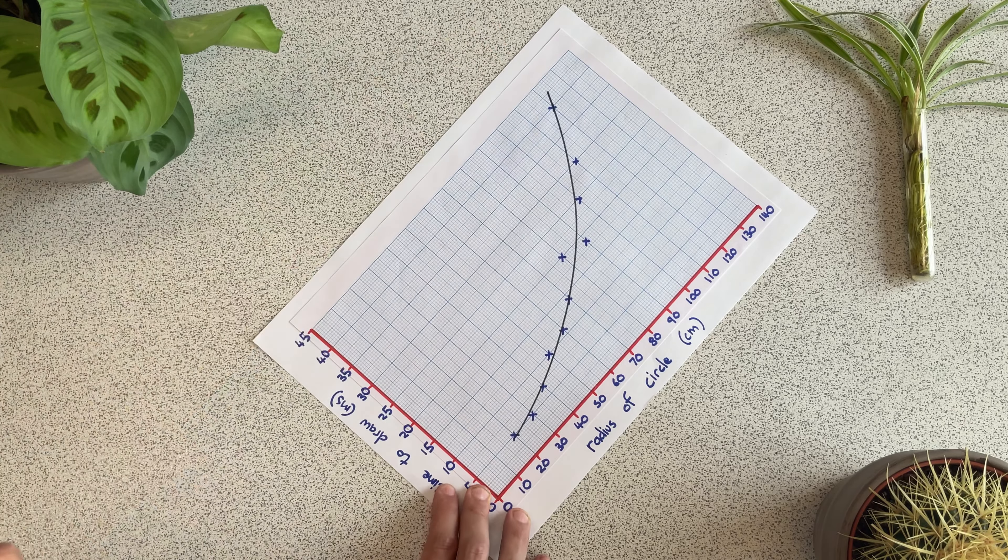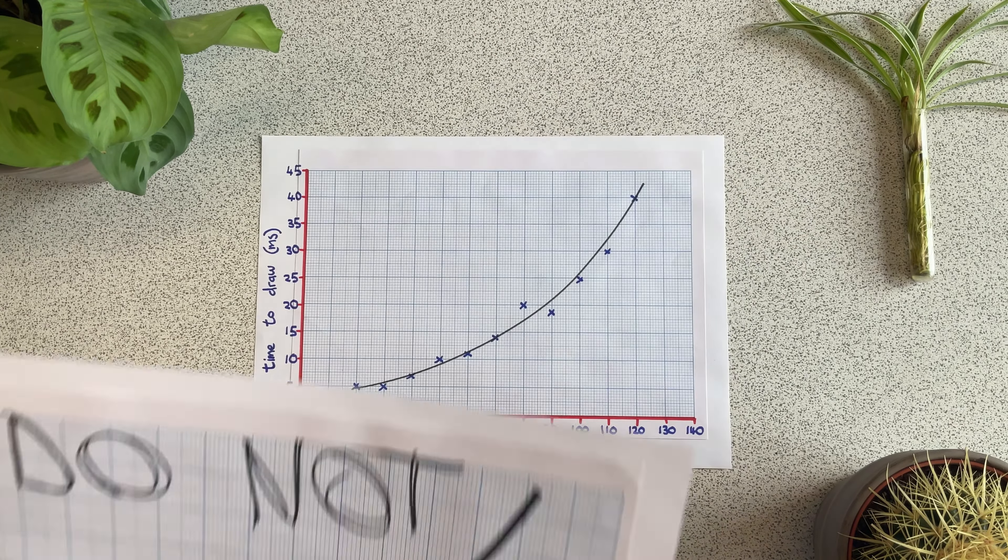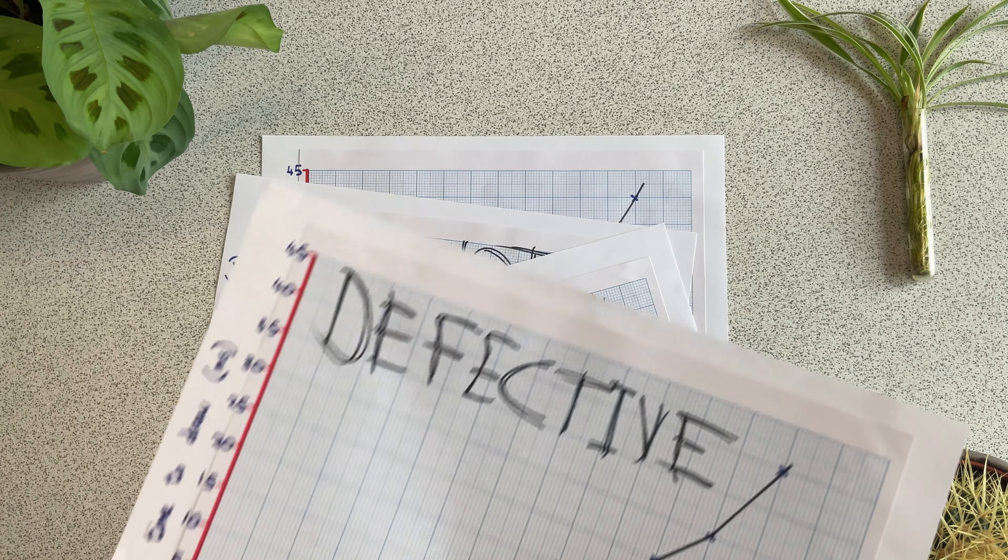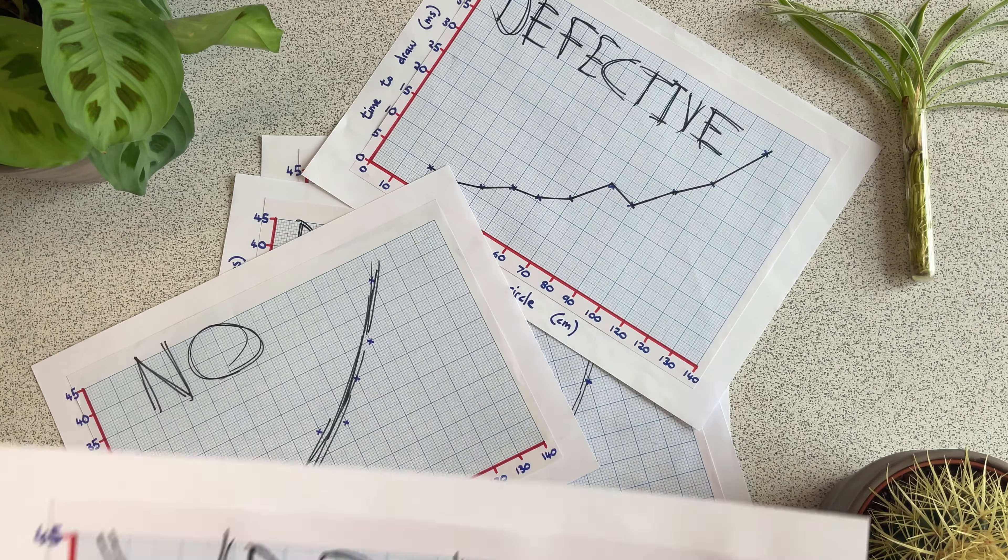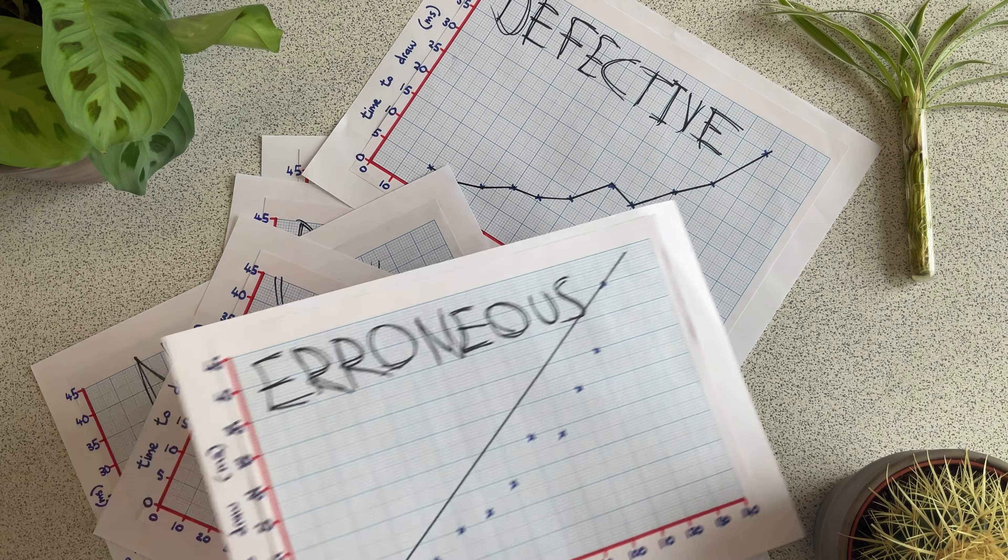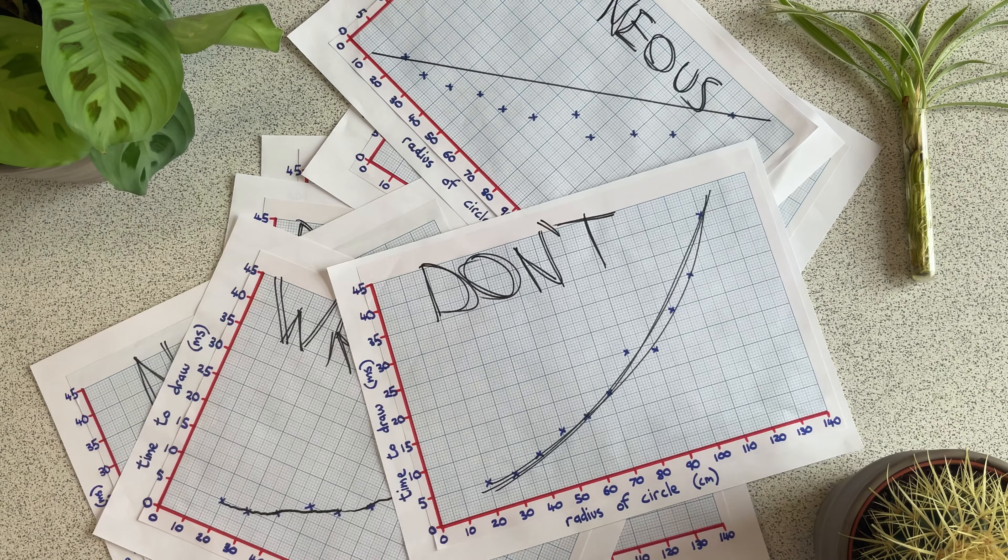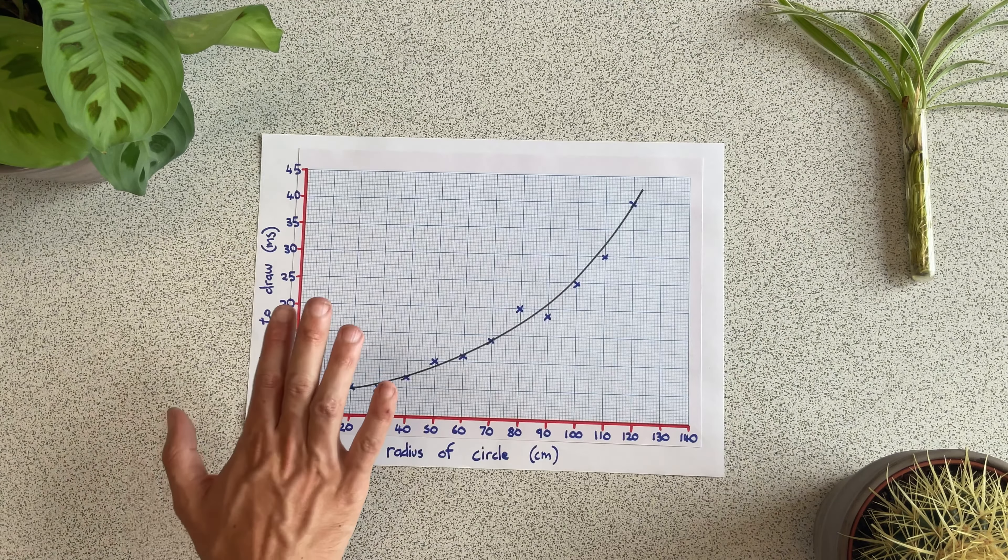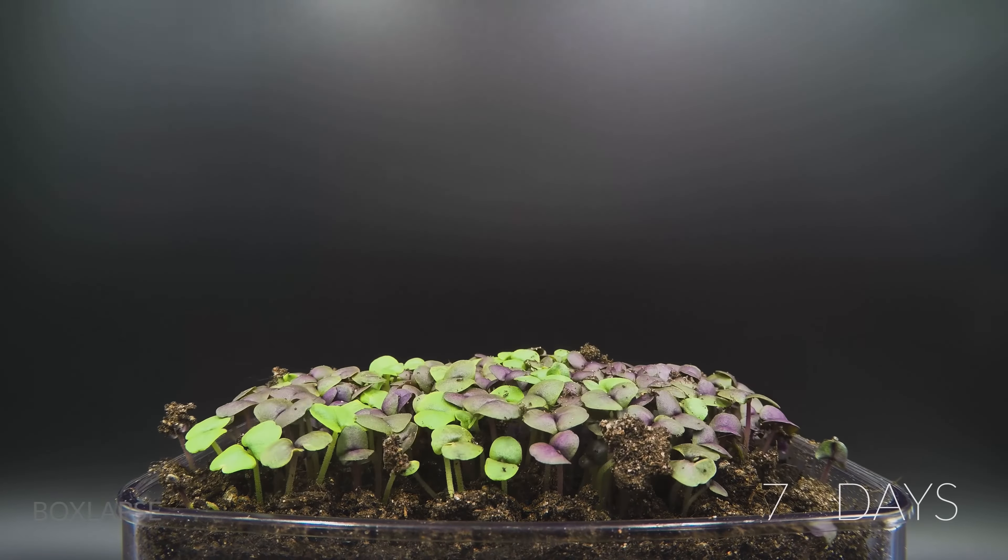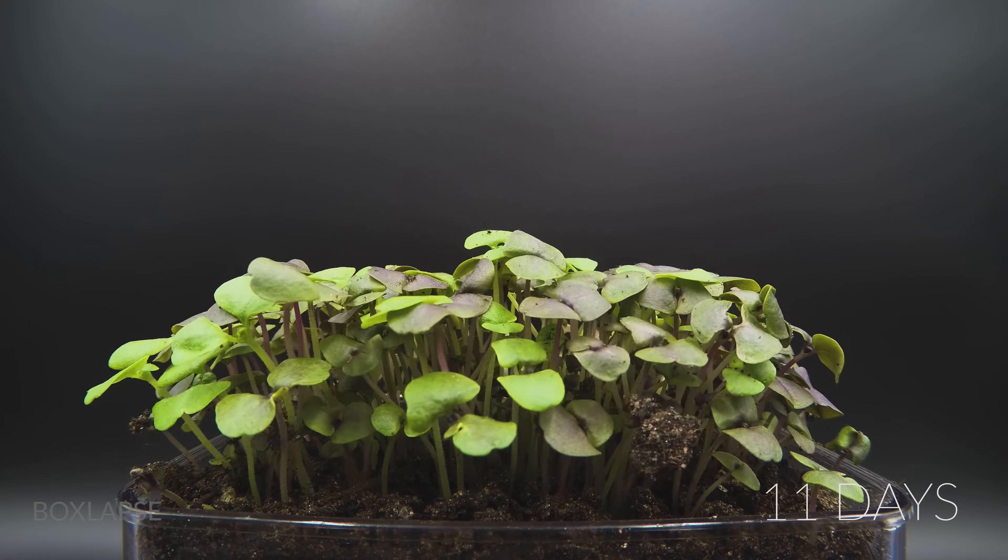Drawing a line of best fit can look easy, but there are many, many, many ways of getting it wrong. In this video, we're going to be looking at how to draw a line of best fit and all the common mistakes to avoid. Let's start with straight lines of best fit and an experiment to see how time in the sun affects plant growth.